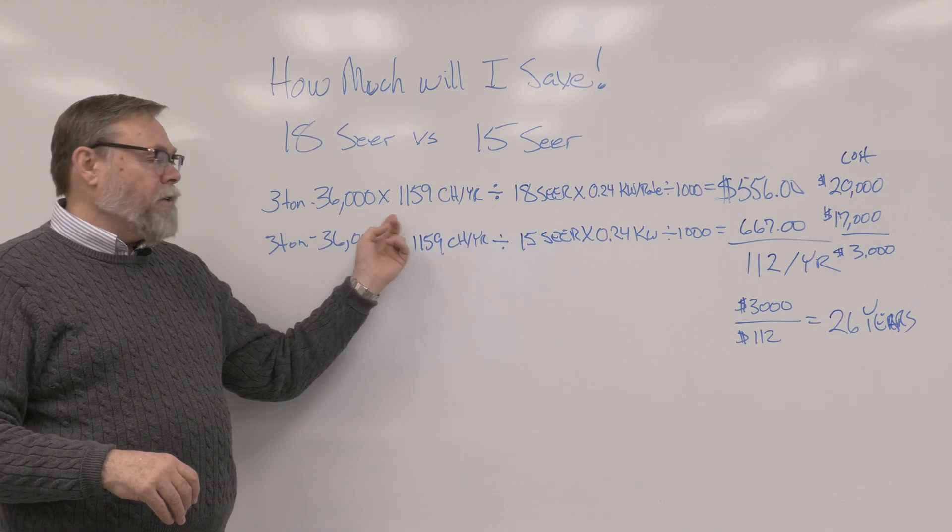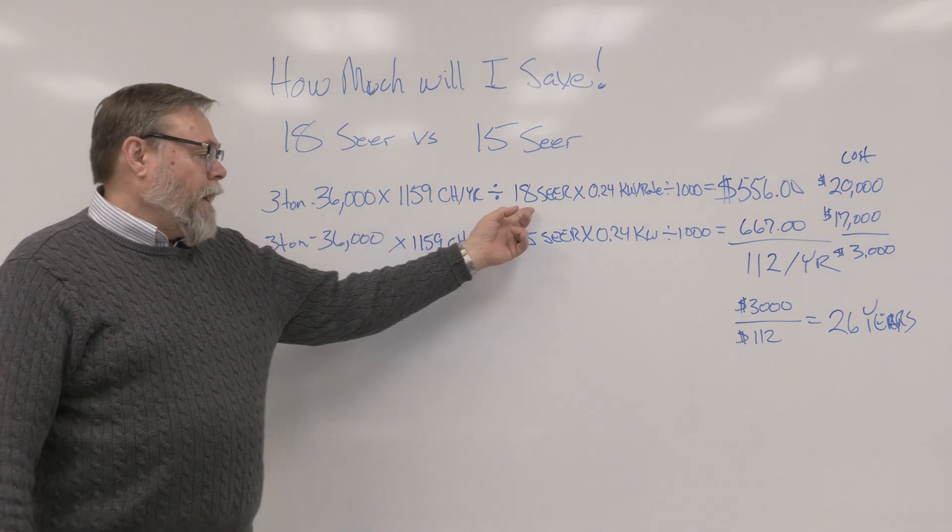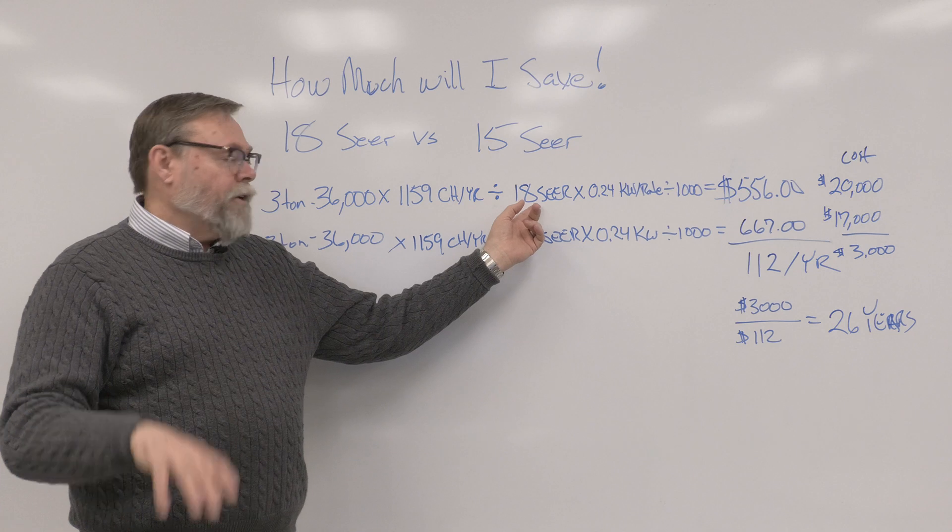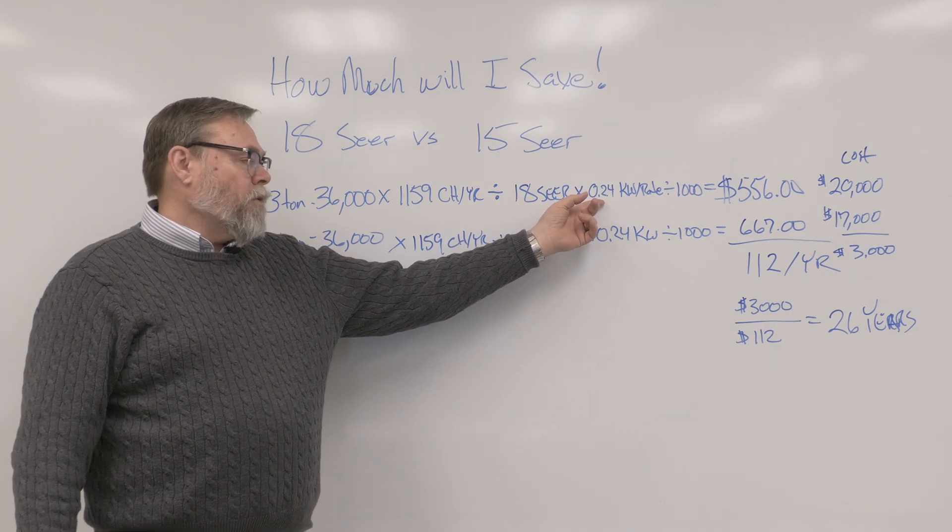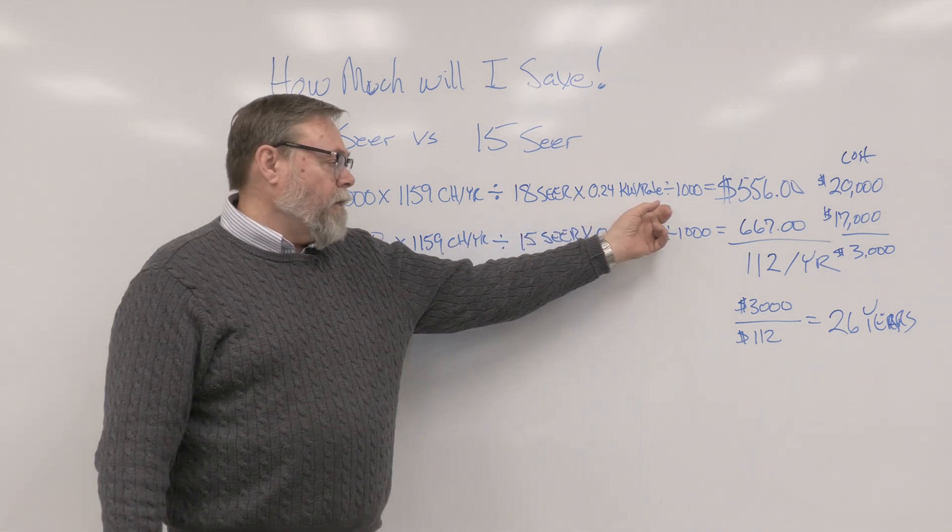multiply it by the 36,000 BTUs. We're going to divide it by the SEER rating, 18 SEER in this case, times our kilowatt rate per hour average, 24 cents per kilowatt, divided by 1,000.